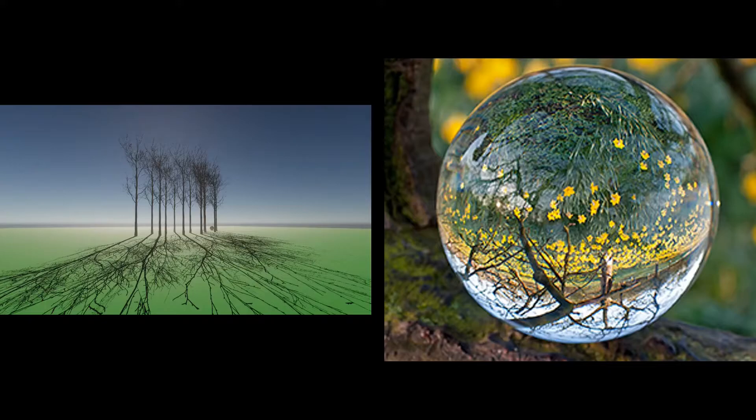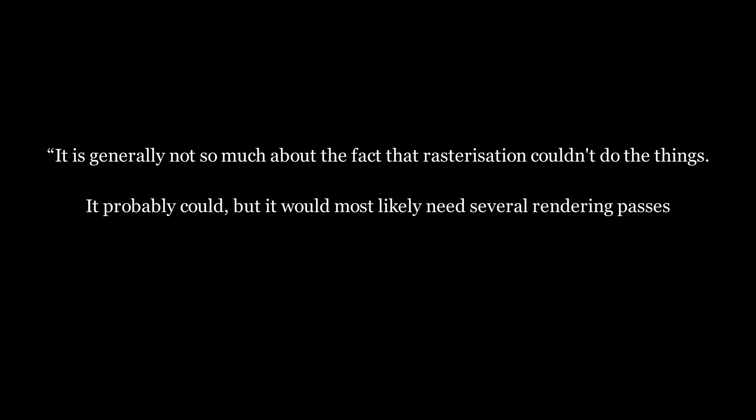Combining these effects gets even more complicated and computationally expensive and more importantly requires more and more rendering passes. Basically anytime you want to add more of these effects, you have to add another rendering pass and a heck of a lot more code. It is generally not so much about the fact that rasterization couldn't do the things it probably could, but it would most likely need several rendering passes and all kinds of dirty tricks to accomplish things that depended on non-local effects. So how can we fix this?